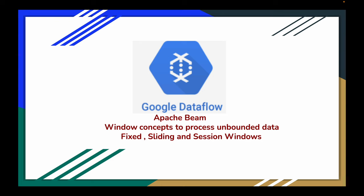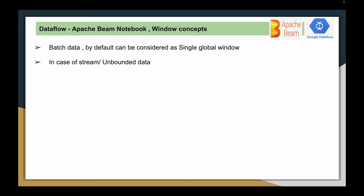We will see each of these window types with detailed examples. In case of batch data, you have all the elements already available in the PCollection beforehand. On top of those elements, you are going to perform a series of PTransformations. In such cases, we call that a single global window.